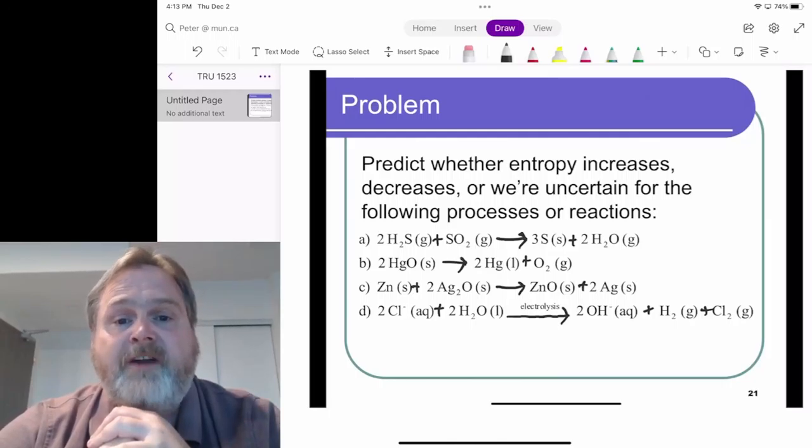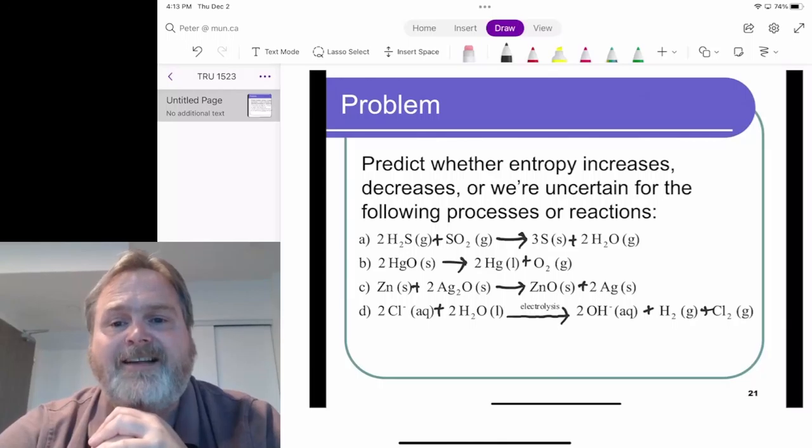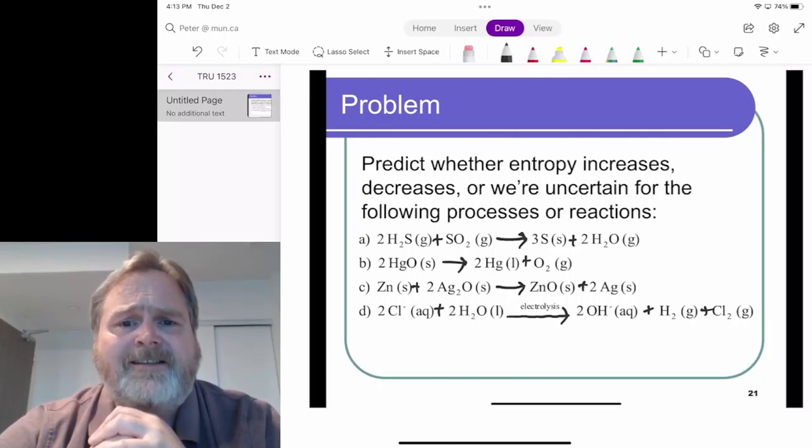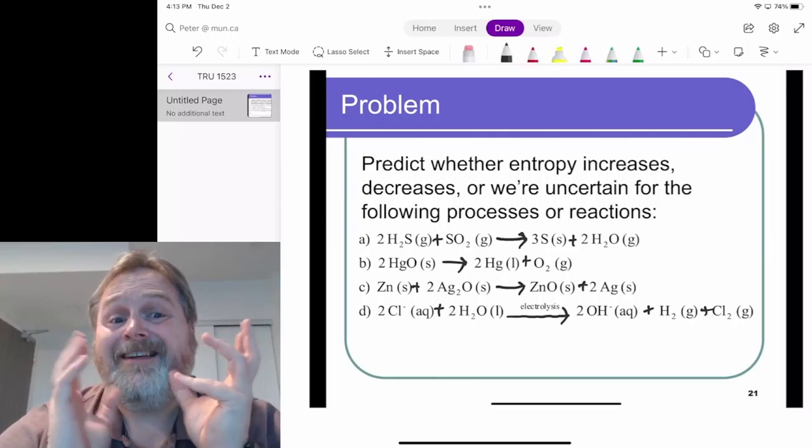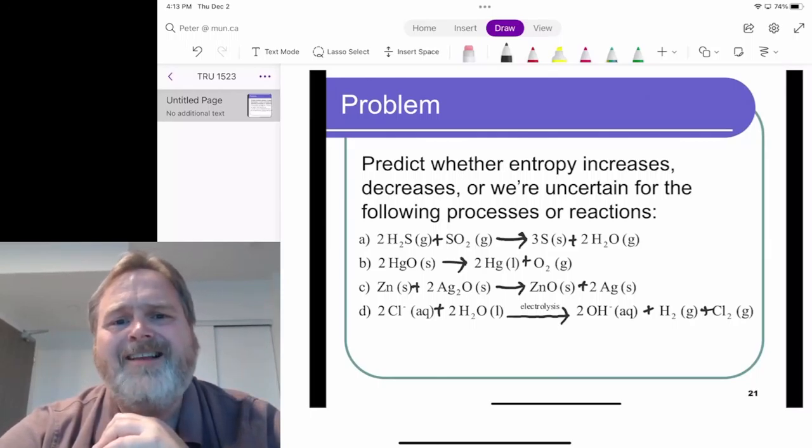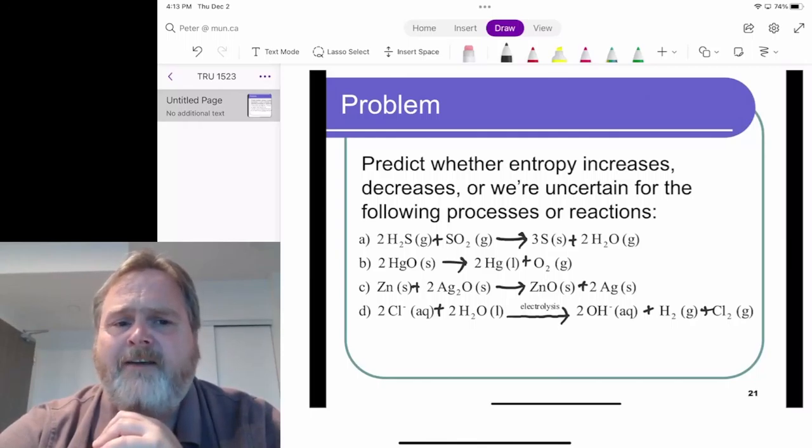Reaction C, where we've got zinc solid and silver oxide solid, giving us zinc oxide solid and two silver solid. Well, we're going from solid to solid, we're going from piles of stuff to piles of stuff. So how we would understand the freedom of motion is essentially the differing environments that the atoms can vibrate in. Well, we don't really know enough about that yet.